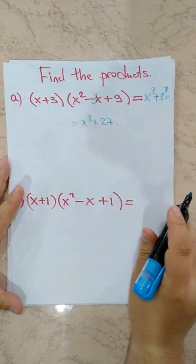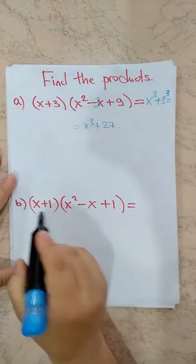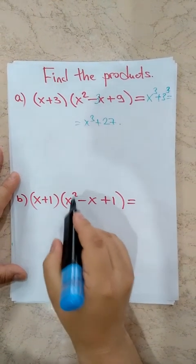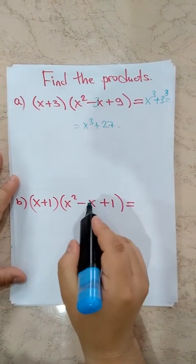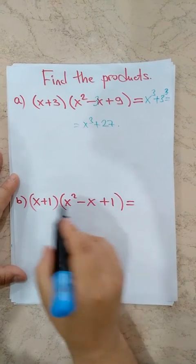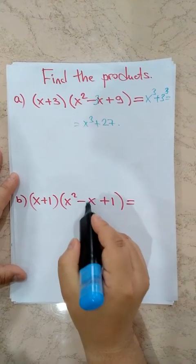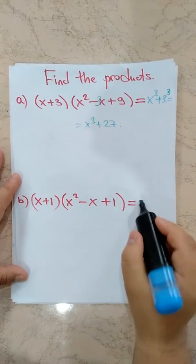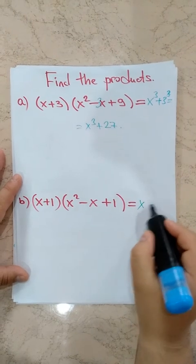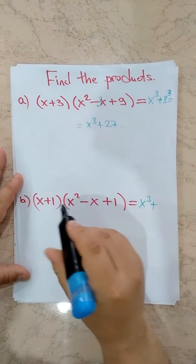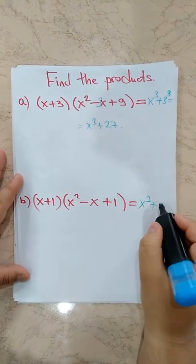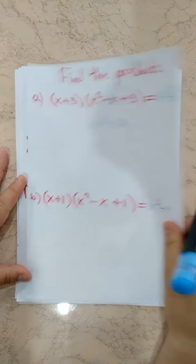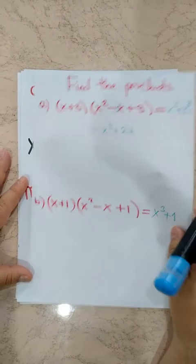And next: X plus 1 times X squared minus X times 1 plus 1. There is a 1 here, plus 1. Our first term gives X cubed, and second term is 1, so plus 1 cubed. And 1 cubed is just 1, giving X cubed plus 1.